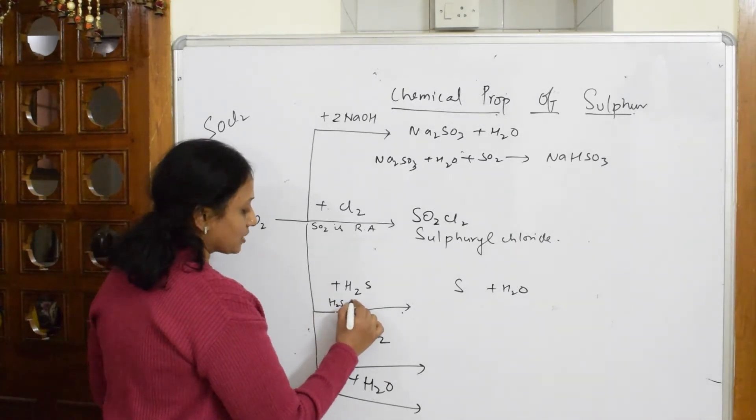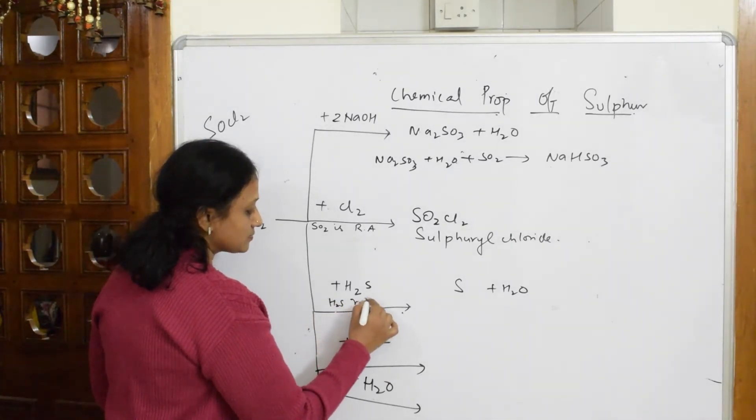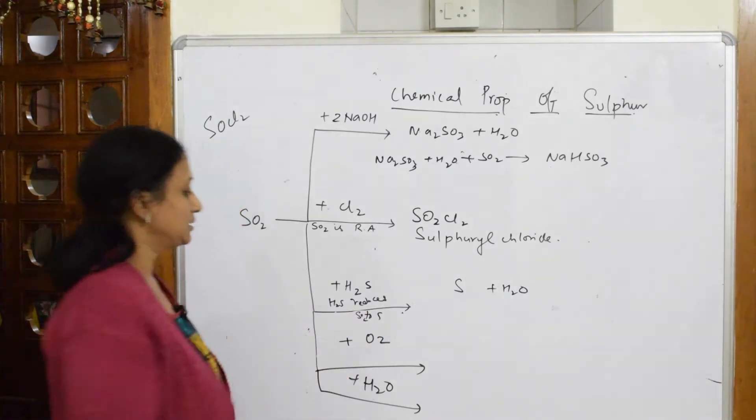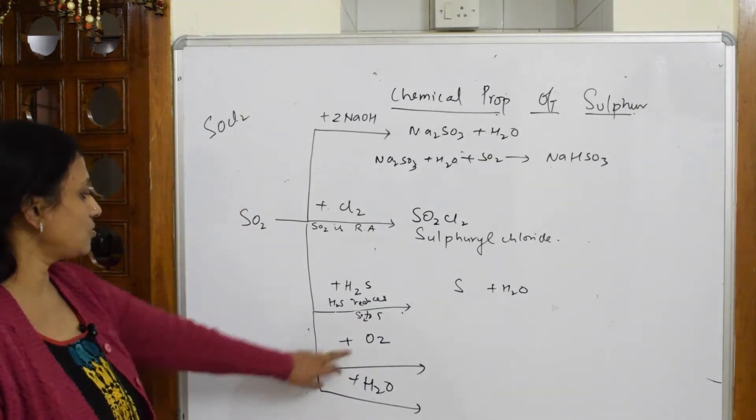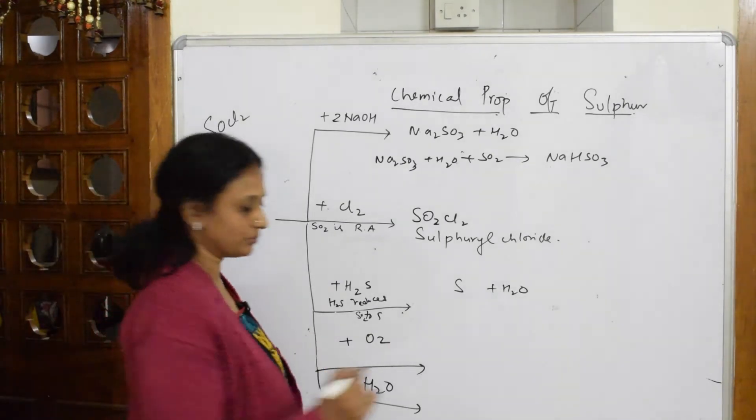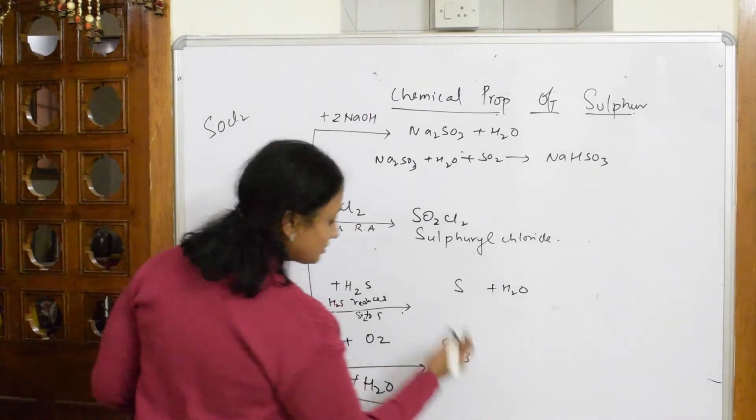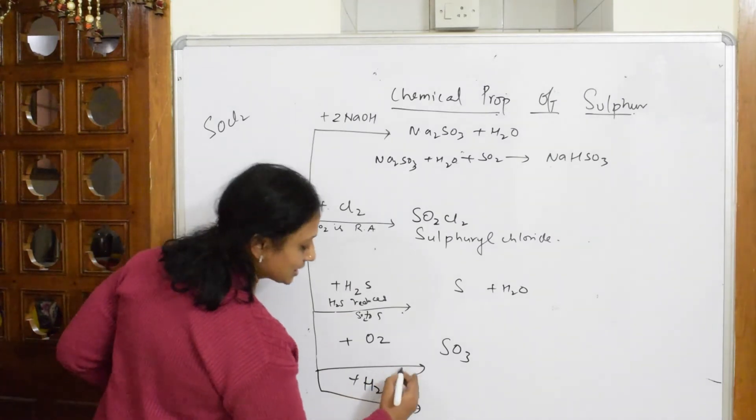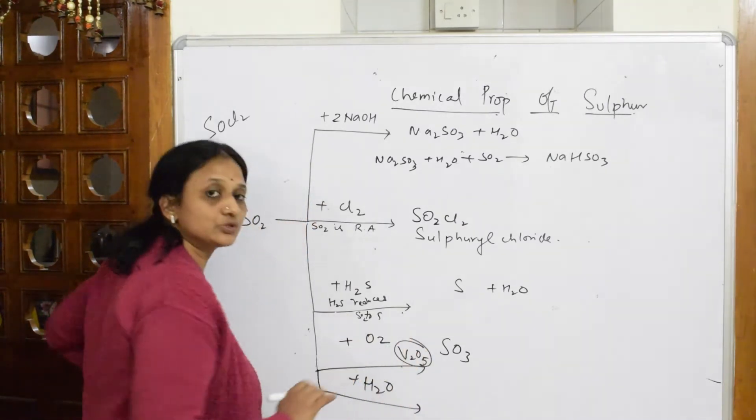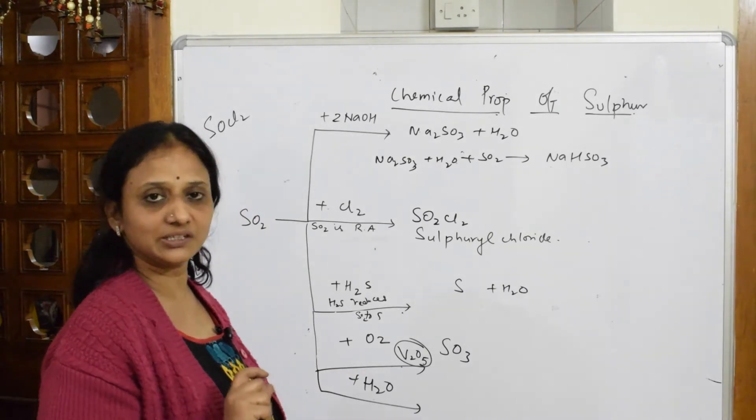Next important: oxygen. Whenever you are seeing a reaction with SO2 and oxygen, simple, the formation of sulfur trioxide. But important here, you're going to use a catalyst, that is vanadium pentoxide. V2O5 is a catalyst which we use for the reaction. That only carries marks in the exam.